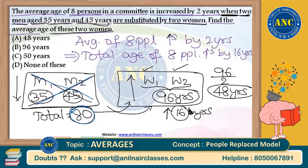That means this 80 years going out should also come in in the form of women, and along with that 80, there is an increase of 16. So totally, women are bringing 80 plus 16, which is 96, inside the class. The sum of 2 women is 96, and the average is 48.